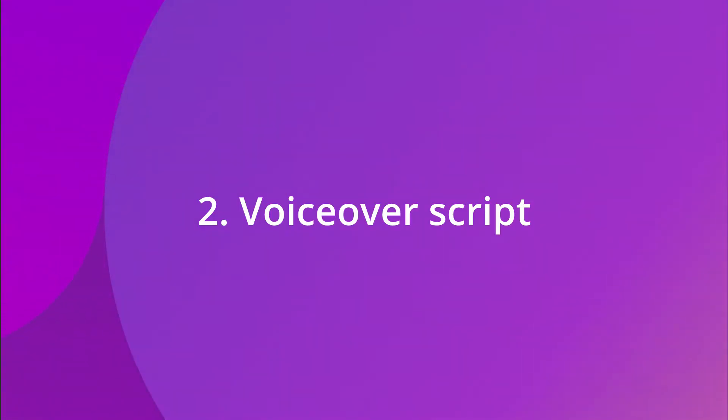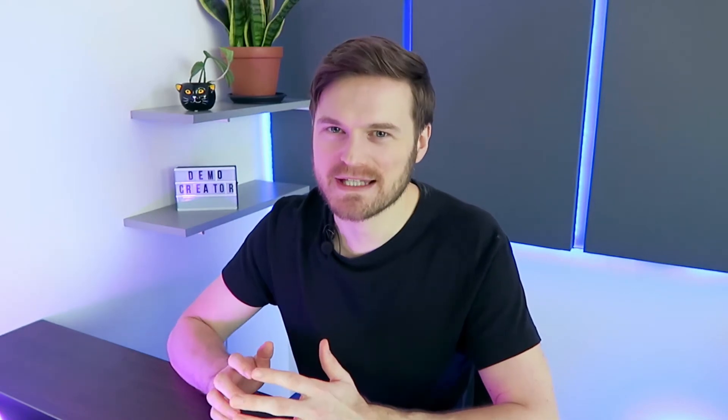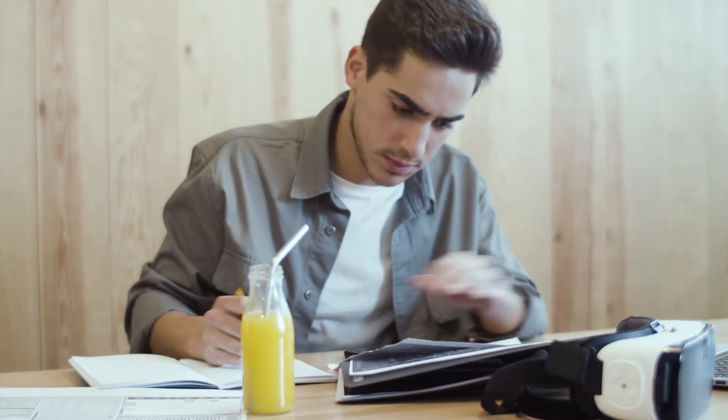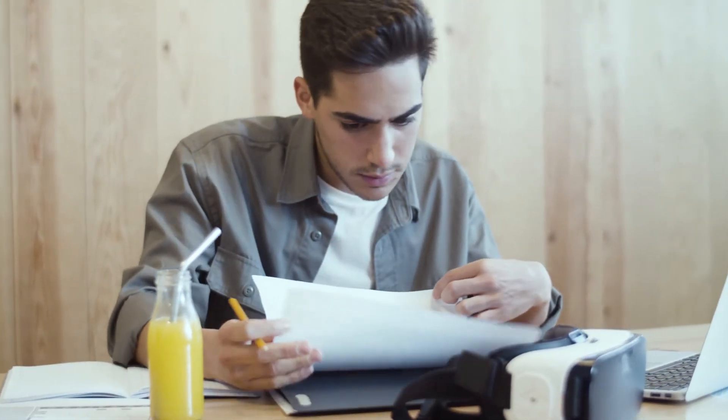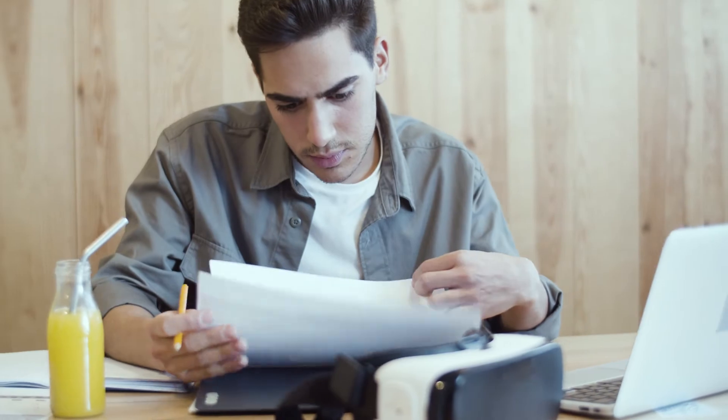Tip number two: voiceover script. If you do not plan to have a voiceover, you can skip this step. However, I would highly recommend considering a voiceover. Once you have sketched your planning and storyboard, you can start writing your voiceover script. Write out headings for each scene and then script each scene based on the bullet points you wrote earlier. Make sure to leave space for changes, because you'll probably want to adjust the script once you get to the recording stage. Most importantly, your voiceover script must help the viewer get a clear understanding of your video topic.